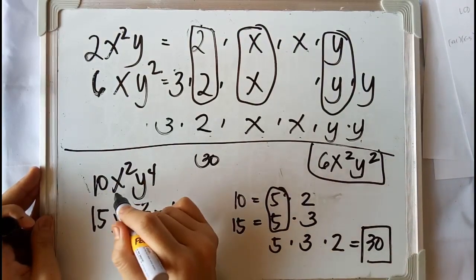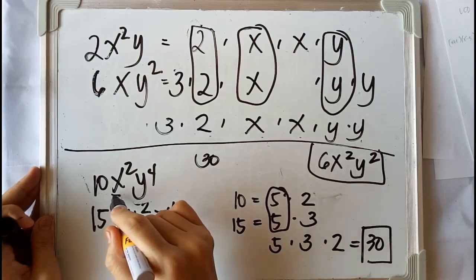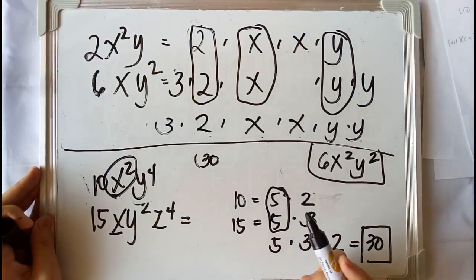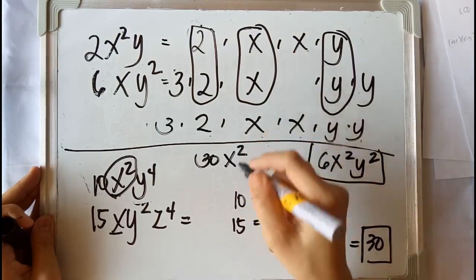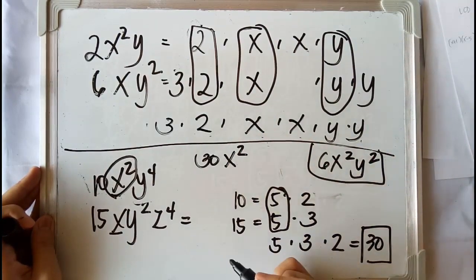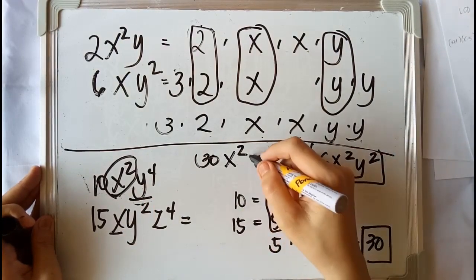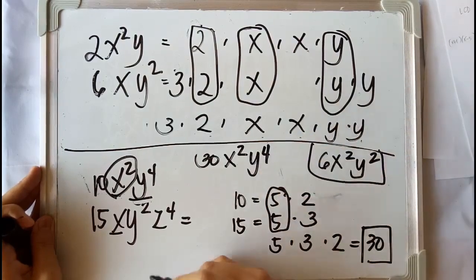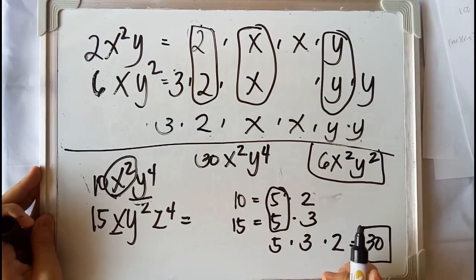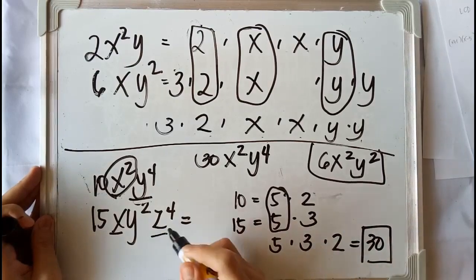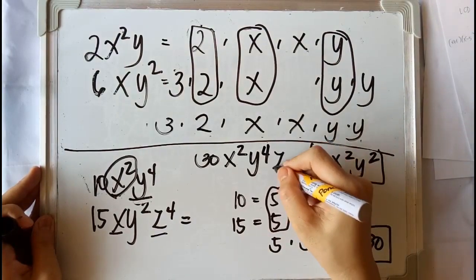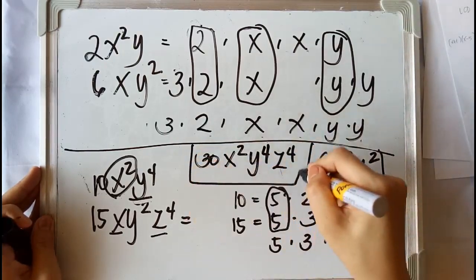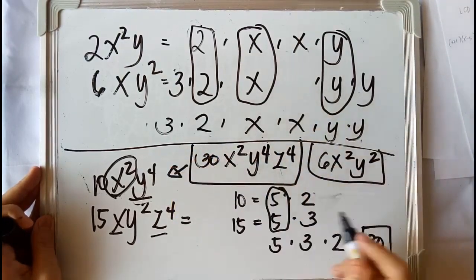Now all you need to do is copy the variable with the highest exponent. For x, x squared has the highest exponent in 10x squared y to the 4th, so that is the LCM for x. For y, copy y to the 4th power since it has the highest exponent. And since 10x squared y to the 4th has no z, you have to copy z to the 4th from the second expression. So we have z to the 4th. This is the LCM of the second example.